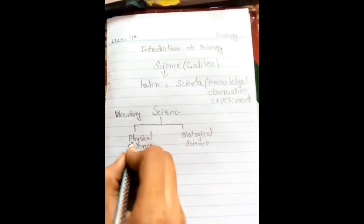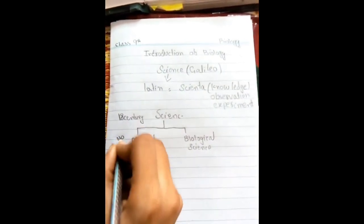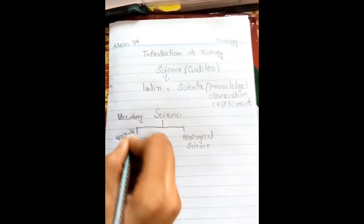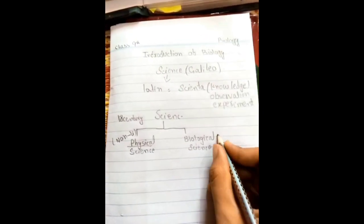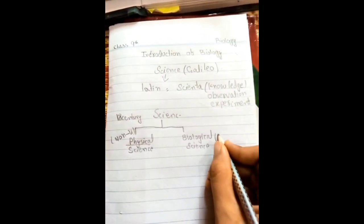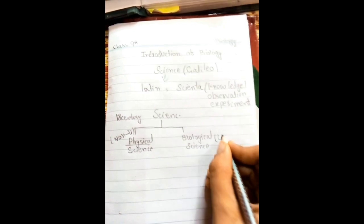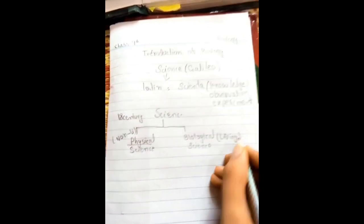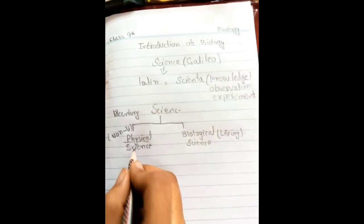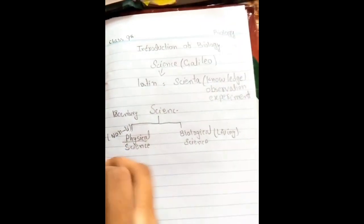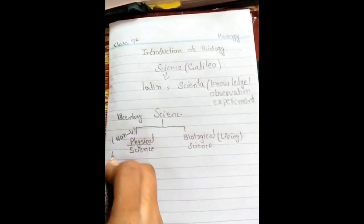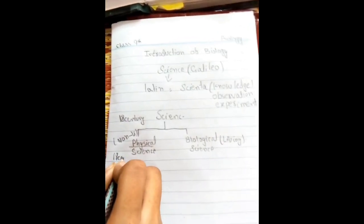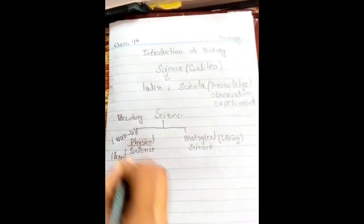Physical science deals with non-living things and biological science deals with living things. In the 19th century, physical and biological sciences were further divided into branches.